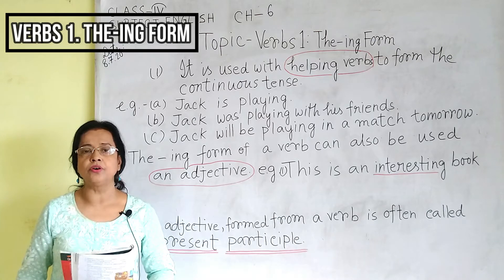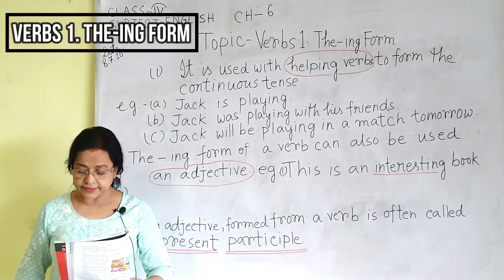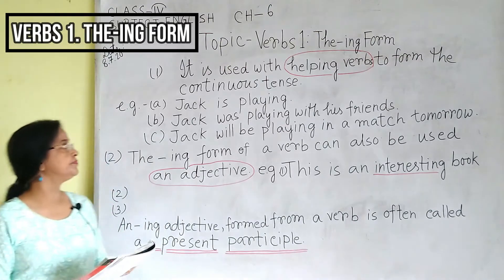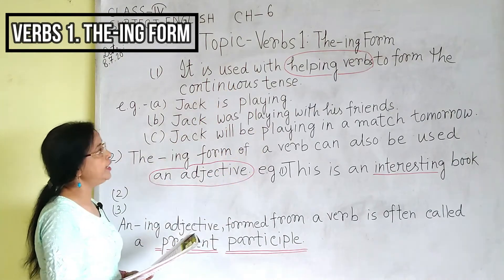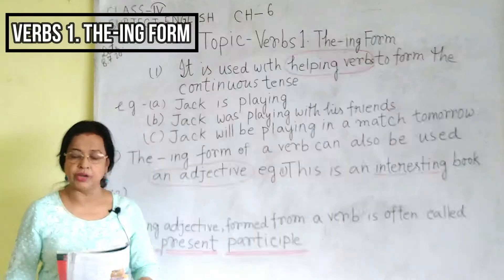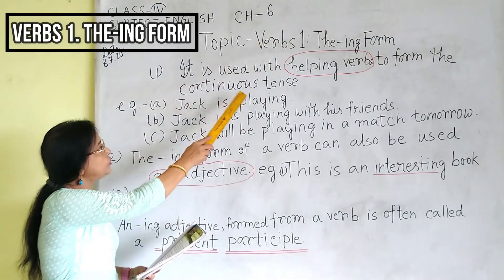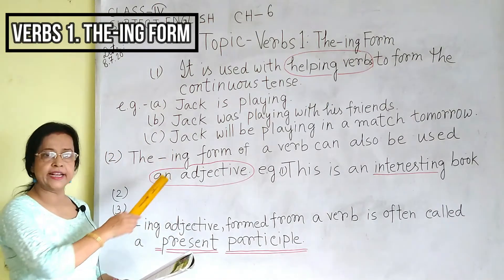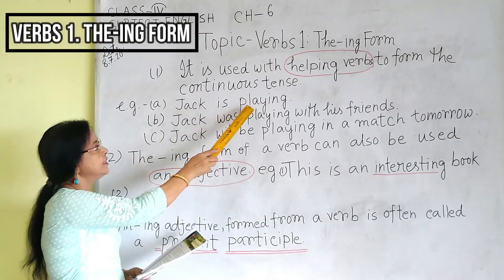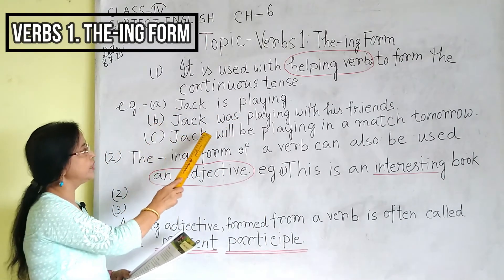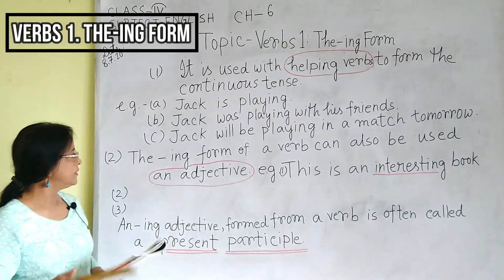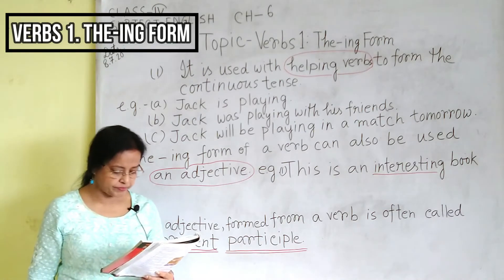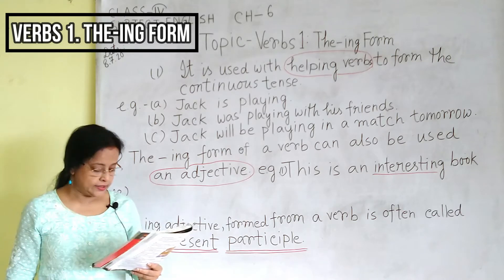The ING form of a verb is a very important form. It is used in many different ways. Please look at the board. First, it is used with helping verbs to form the continuous tense. Three examples: (a) Jack is playing. (b) Jack was playing with his friends. (c) Jack will be playing in a match tomorrow.